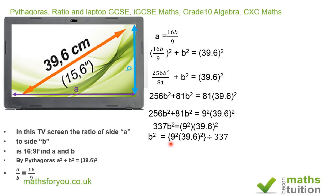If we divide both sides by 337, we end up with b² = 9²(39.6)²/337.